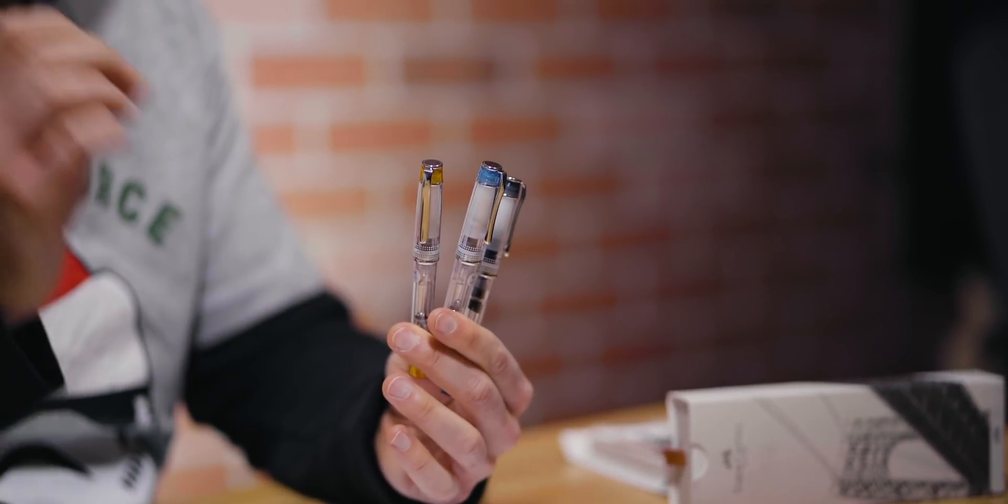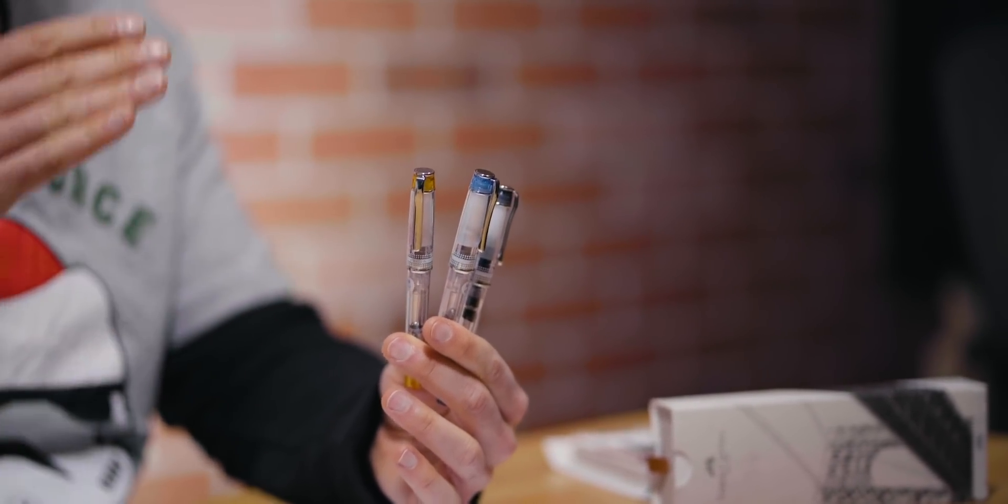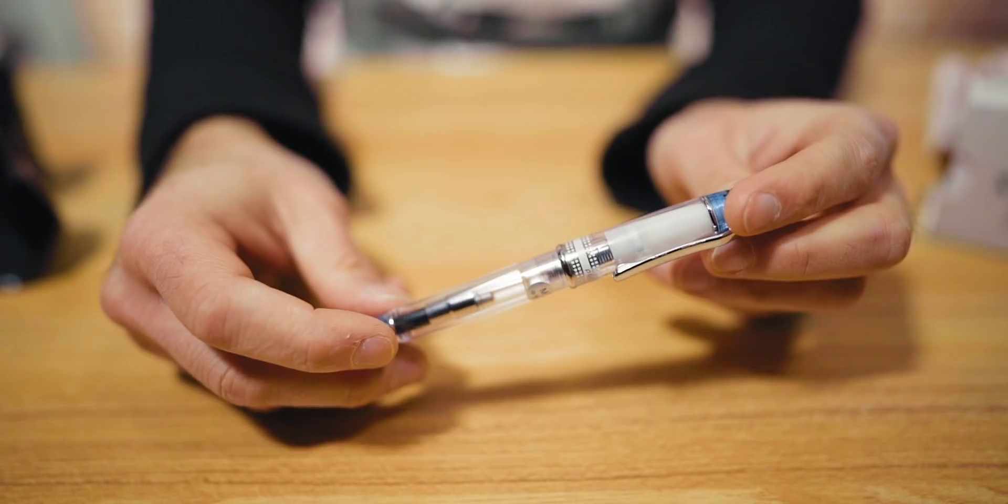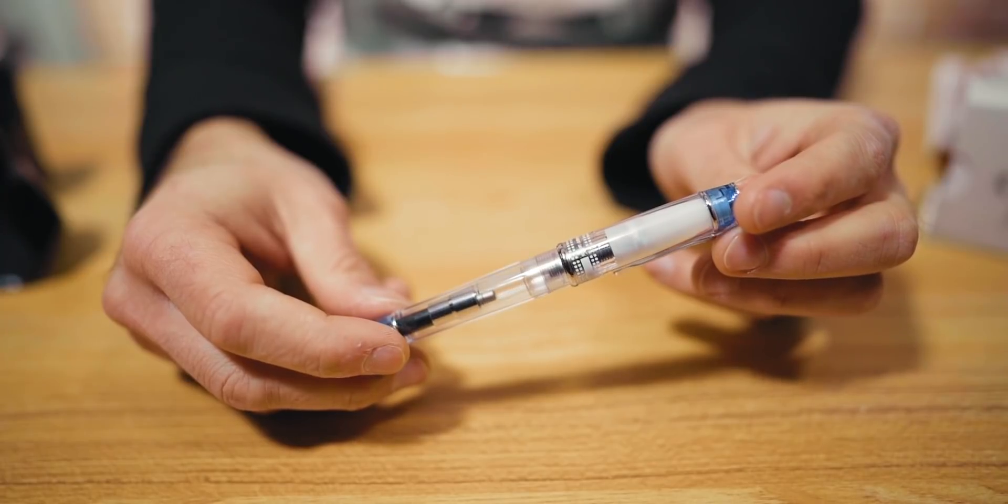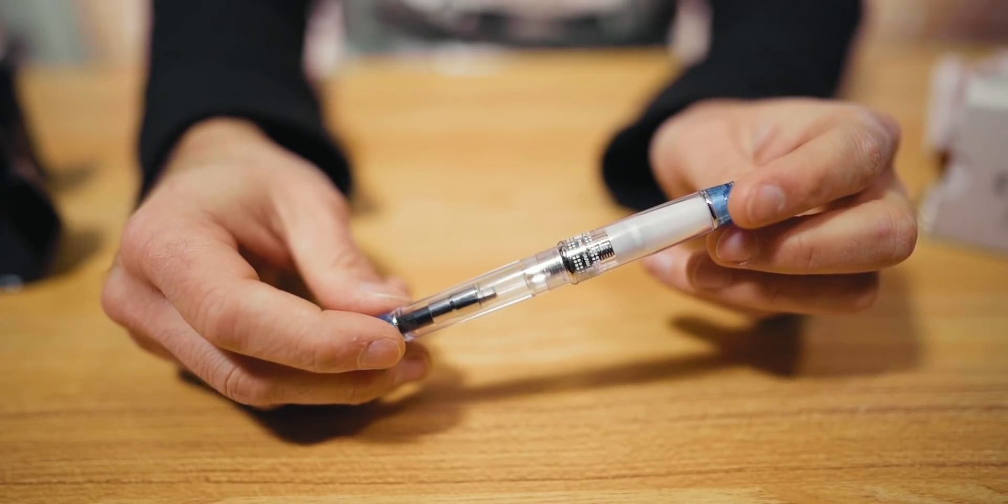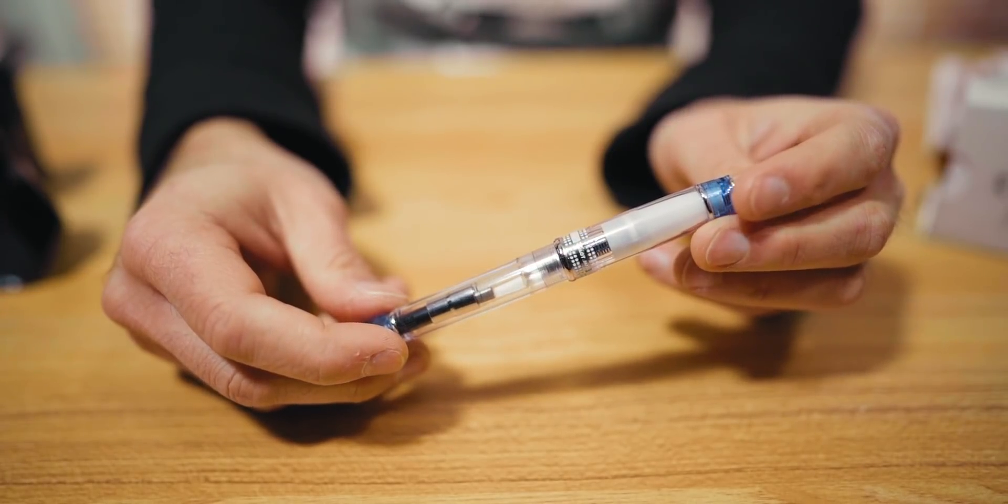Here's a pen that kind of gets lost between the Pilot Metropolitan and the Custom 74 or Vanishing Point. Like I mentioned with the Procyons, this pen is priced perfectly for somebody who's looking to graduate from the starter fountain pen level, but not looking to get all the way in deep with a gold nib. And this is the Pilot Prera. This is a pocket-sized, lightweight, quick-draw pen.